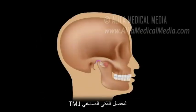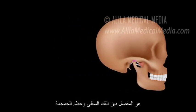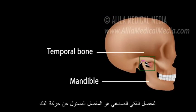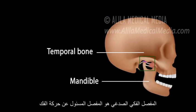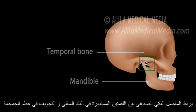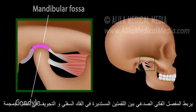The temporomandibular joint, the TMJ, is the joint between the lower jawbone, the mandible, and the temporal bone of the skull. The TMJ is responsible for jaw movement and is the most used joint in the body. The TMJ is essentially the articulation between the condyle of the mandible and the mandibular fossa, a socket in the temporal bone.